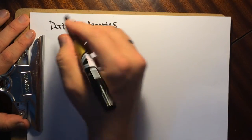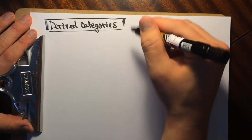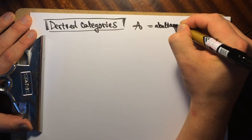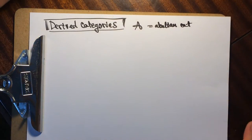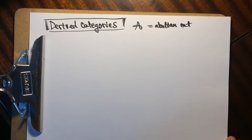So, derived categories. First, in this video we're going to fix A to be an abelian category. An abelian category is an additive category — that means it's enriched in the category of abelian groups, which means its Hom sets are actually groups. You can add and subtract morphisms and there's a zero morphism. There's also a zero object, it has finite products and coproducts, it has kernels and cokernels, and importantly every monomorphism is a kernel and every epimorphism is a cokernel.